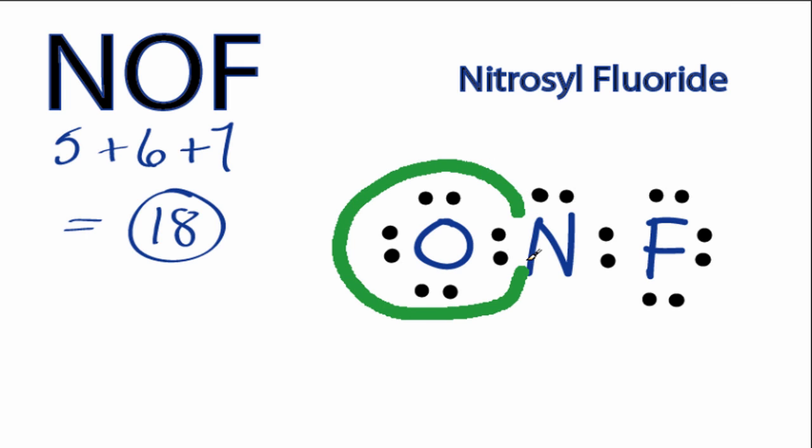We can see oxygen has 8 valence electrons, so it has an octet, as does fluorine, full outer shell, but nitrogen only has 6 valence electrons.